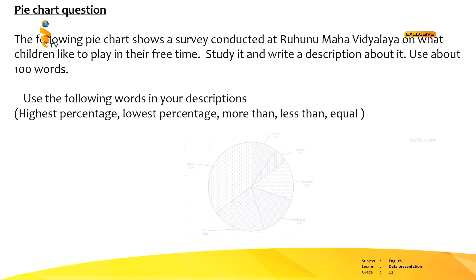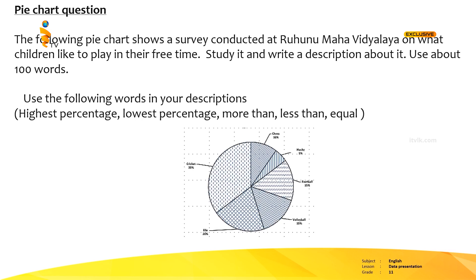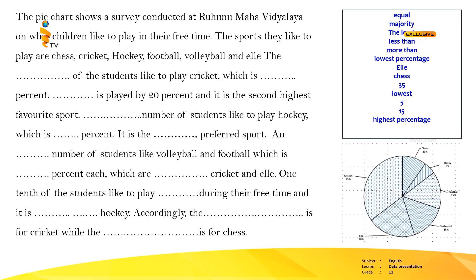Now there is another question. The following pie chart shows a survey conducted at Ruhun Mahavidhyalaya on what children like to play in their free time. Study it and write a description about it using 100 words. Use the following words: highest percentage, lowest percentage, more than, less than, equal. Fill in the blanks using these words: equal, majority, the least, less than, more than, lowest percentage, LA, chess, 35, lowest, 5, 15, highest percentage.